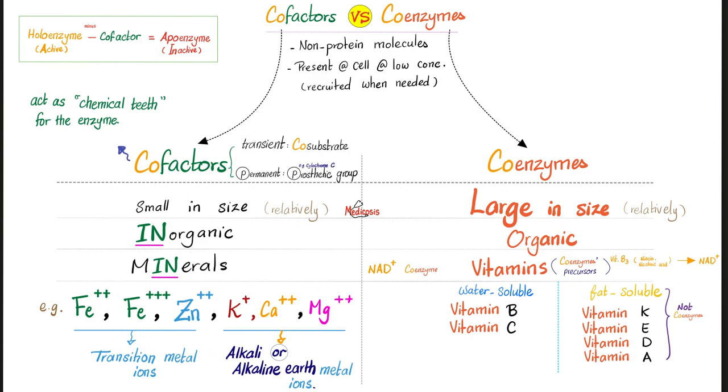These metals are needed by your body. Some of them are transition metals, about the middle of the periodic table. But others are alkali or alkaline earth metals. And they are on the left side of the periodic table, if you remember your freaking chemistry.